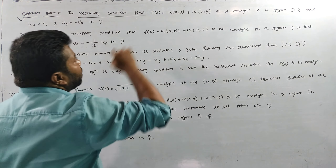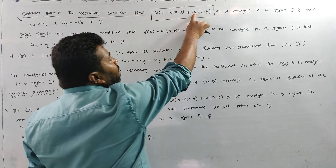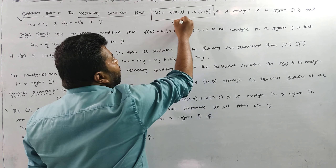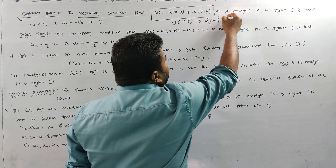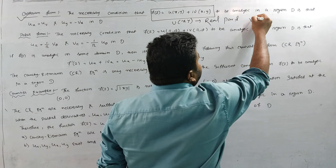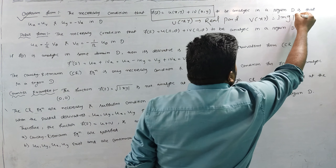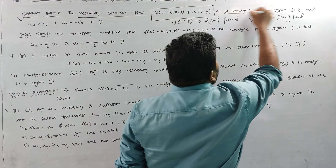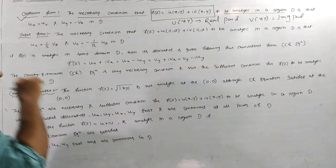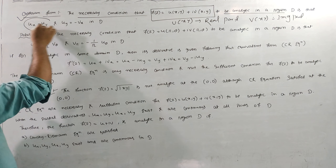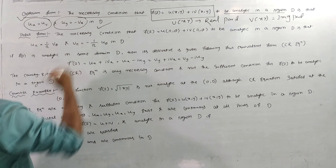The necessary condition: f(z) equals u(x,y) plus i·v(x,y), where u(x,y) is the real part and v(x,y) is the imaginary part. For the analytic function, the Cauchy-Riemann (CR) equations must be satisfied: ∂u/∂x = ∂v/∂y and ∂u/∂y = −∂v/∂x, in the domain D.